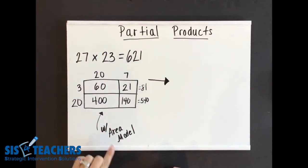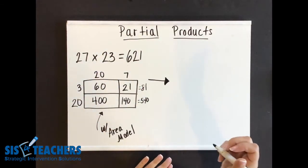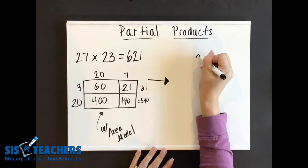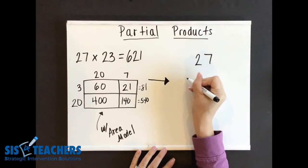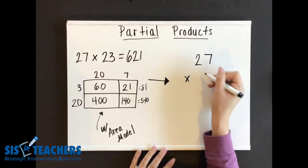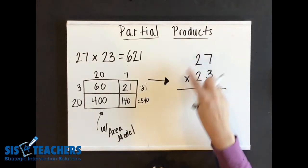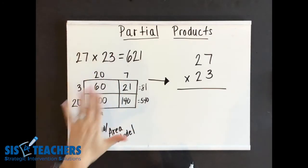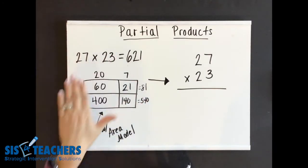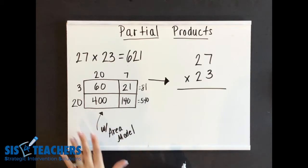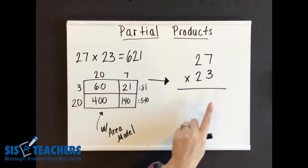As we transition from partial products with the area model, we're going to just go into partial products itself, which is going to help us move towards understanding that traditional method. So here I'm going to stack the problem in more of a traditional method. Here we were really using more of the decomposing through place value and going through the parts as we were looking at it. But in this part, I'll go through the motions as we're seeing it with the area model, but just showing it how to do it in the partial products view.